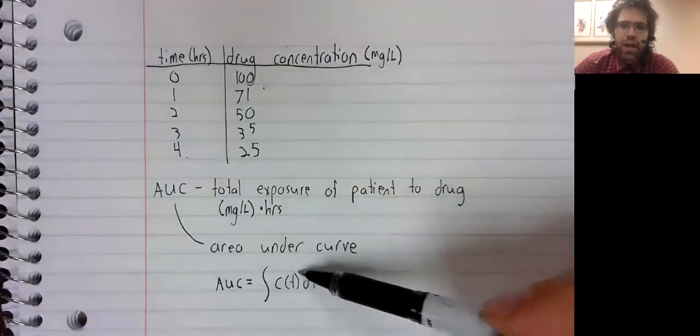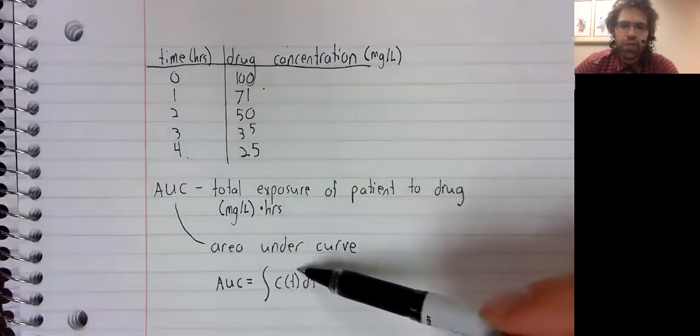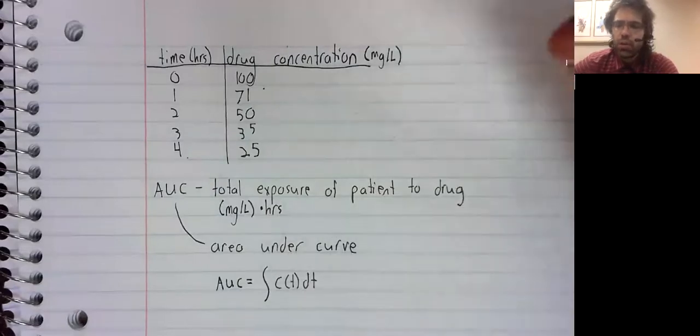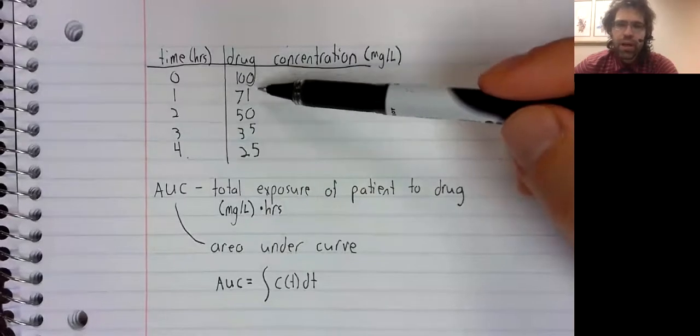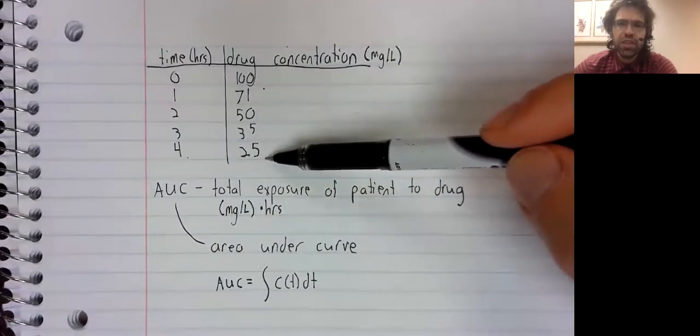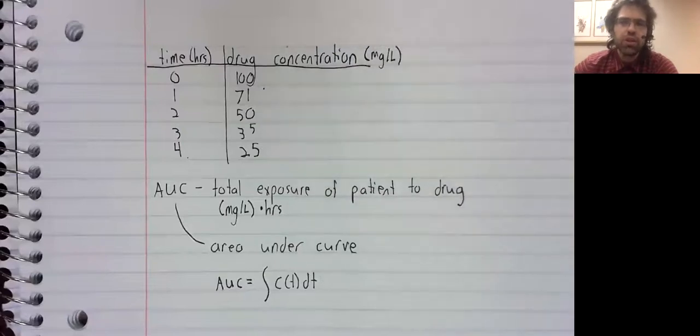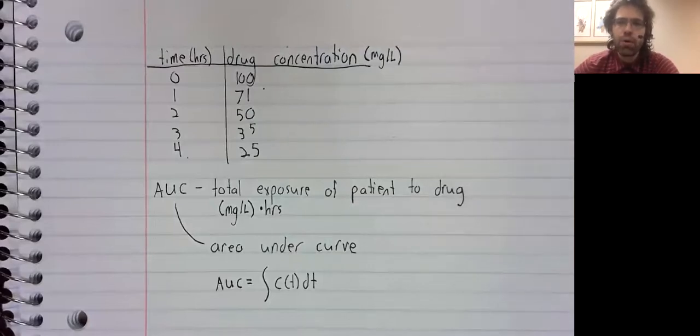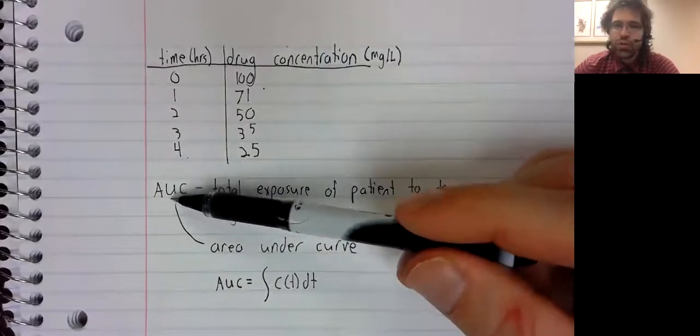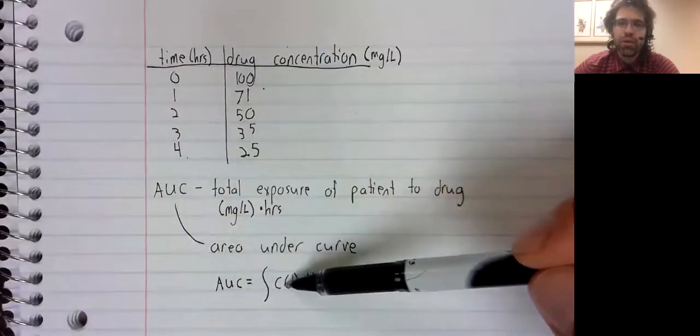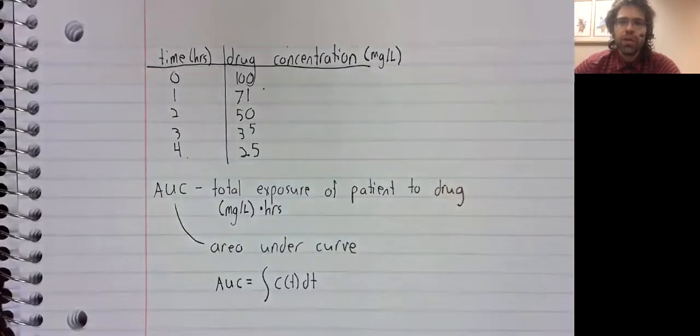We're not going to have a formula for C of t. What we will have is a series of discrete snapshots. The doctor checks the drug concentration every hour, let's say. So if we want to find the area under this curve, if we want this integral, we can only approximate it using the trapezoidal rule.